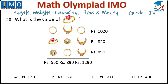Question 28: What is the value of a ring? Given: 2 bangles plus 1 necklace = ₹1020. 1 ring plus 1 earring plus 1 necklace = ₹820. 1 earring plus 1 bangle plus 1 necklace = ₹890. Adding the first two suitable equations: 2 bangles + necklace = 1020, and 1 bangle + 2 necklaces = 1290.